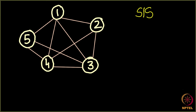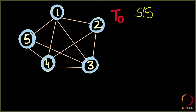Initially all nodes in the network are susceptible, shown in blue. At T0, an infection comes and infects node 1 — it now has a common cold. The value of Ti, the time a node remains infected, is set to 1, so each node remains infected for 1 day.